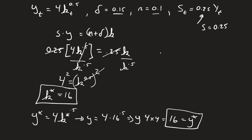So we see y star is equal to 16, and k star is equal to 16. Now we also want to know what my c star was equal to. c star is going to be equal to just my overall production minus my savings.